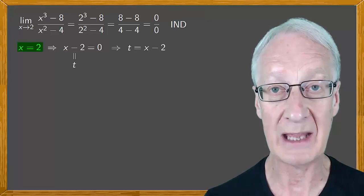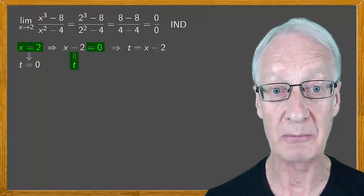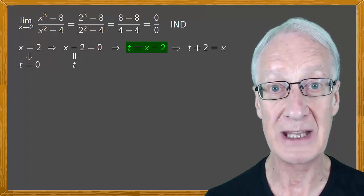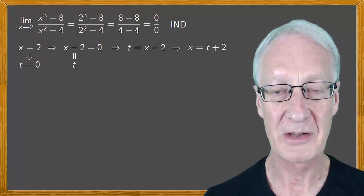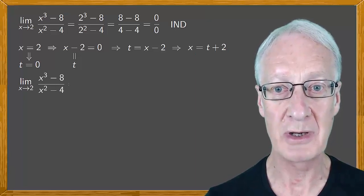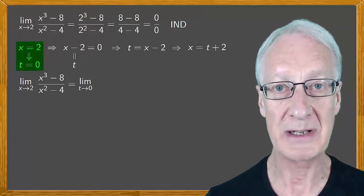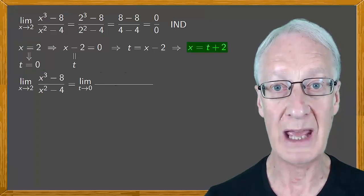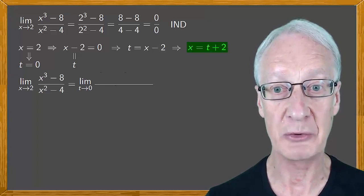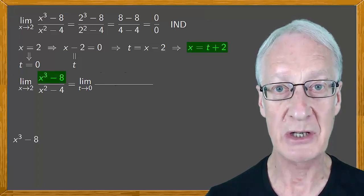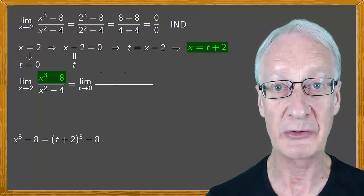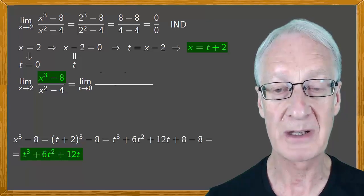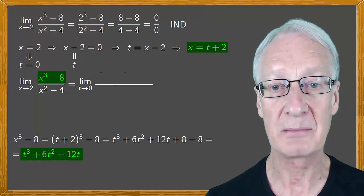Notice that when x is 2, t equals 0. Also, from here we have that t plus 2 equals x. Thus, the limit as x tends to 2 of our function is the limit as t tends to 0 of the quotient, with x replaced by t plus 2. The numerator, x cubed minus 8 becomes t plus 2 cubed minus 8, or expanding this, t cubed plus 6t squared plus 12t.